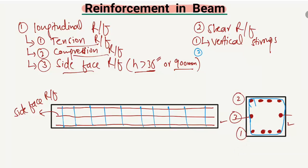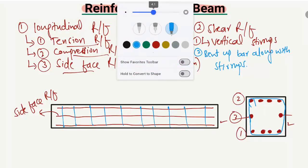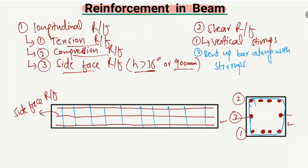The second type of shear reinforcement is the bent up bar along with stirrups. They are drawn like this: first straight, then inclined, then straight again, then inclined again. They are known as the bent up bar along with stirrups, and these reinforcements are also used to take the shear stresses.